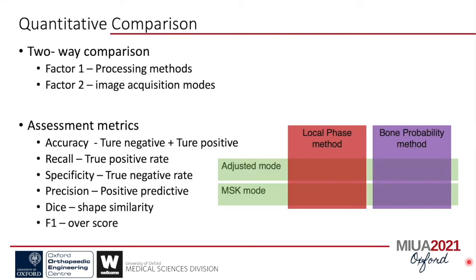The example of two different acquisition modes demonstrates the potential that the adjusted mode could be helpful in bone segmentation. After data processing, we compared the performance between algorithms and acquisition modes using two-way ANOVA. The comparison metrics were: accuracy (total percentage of correct estimation), recall (true positive rate), specificity (true negative rate), precision (positive predictive value), Dice coefficient (shape similarity), and F1 score as an overall rating.